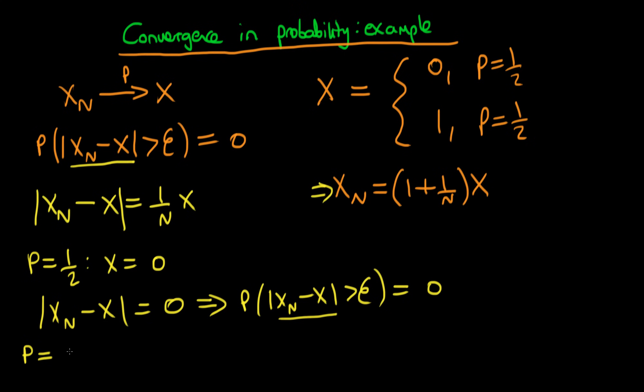How about the second circumstance? We have the probability equal to a half that X is equal to one. In this circumstance, we have that Xn minus X is equal to one over n. So we can now work out the probability. We have that the probability that Xn minus X, or with the modulus around it rather, is greater than some amount η...